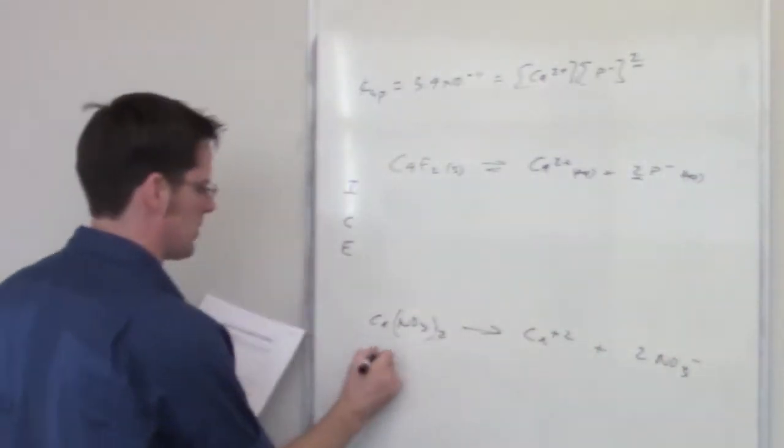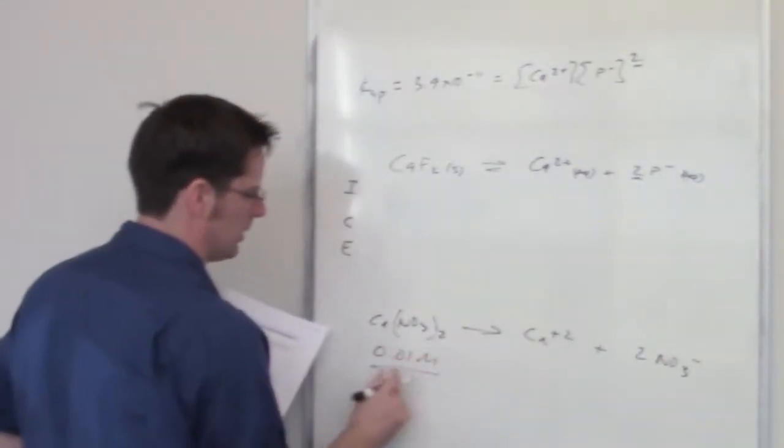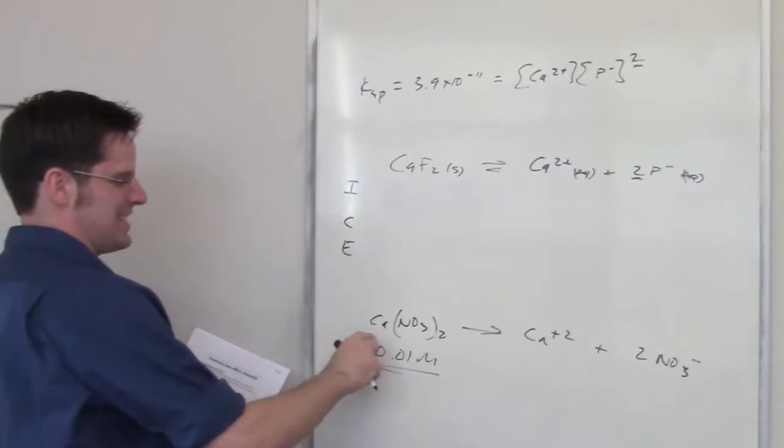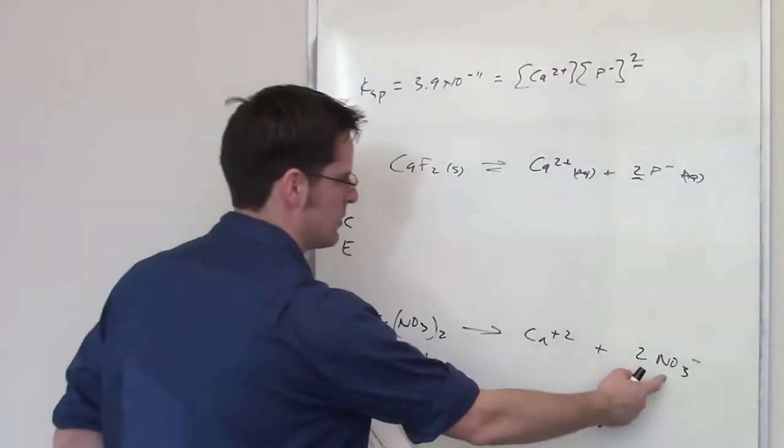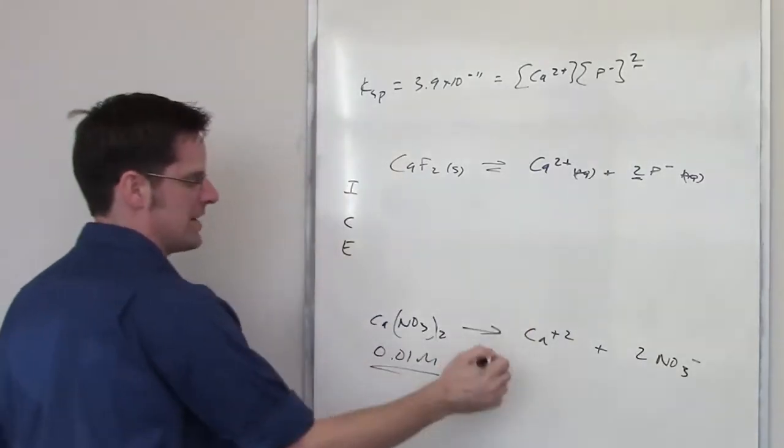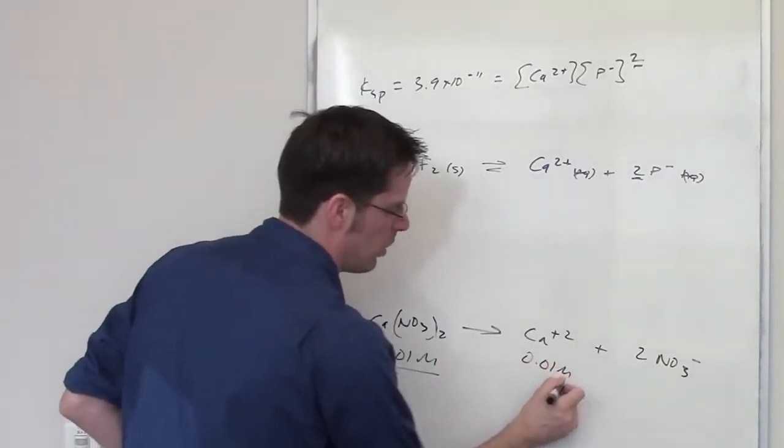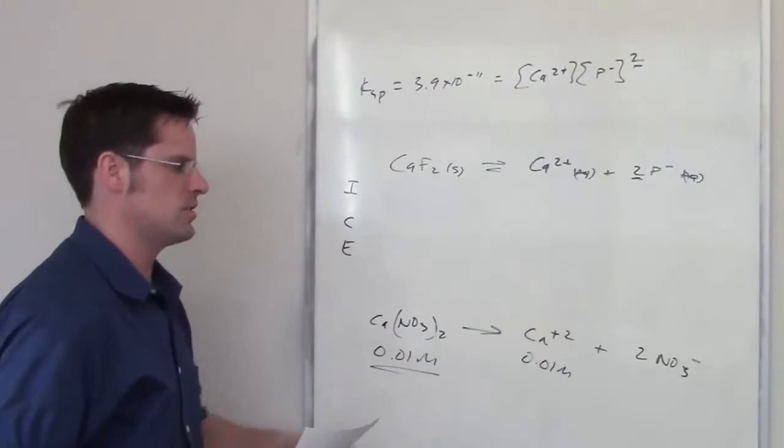It tells me that the solution that we're throwing in here is 0.01 molar. Now what that means is because this is present in a one-to-one ratio relative to calcium, I don't care about the nitrate because the nitrate isn't a common ion up here. This is going to give off 0.01 molar equivalents of calcium 2 plus.